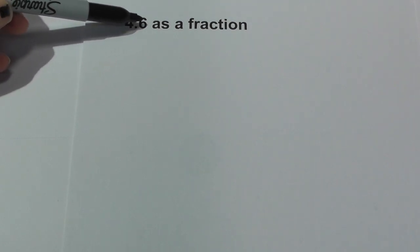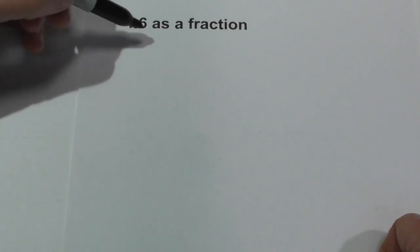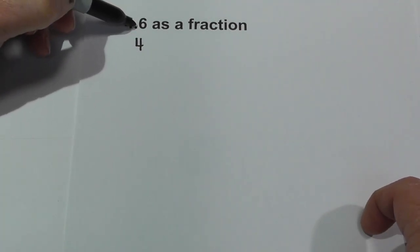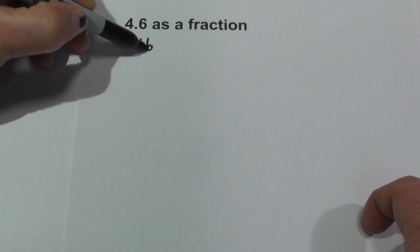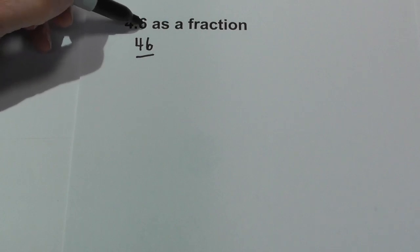But numbers to the right of the decimal start at tens. So the first thing we are going to do is write this as a fraction, and we need to move the decimal all the way to the right. So it becomes 46. And there's a couple ways you can look at this. You could say this last number is tens, so you could write it over a 10.